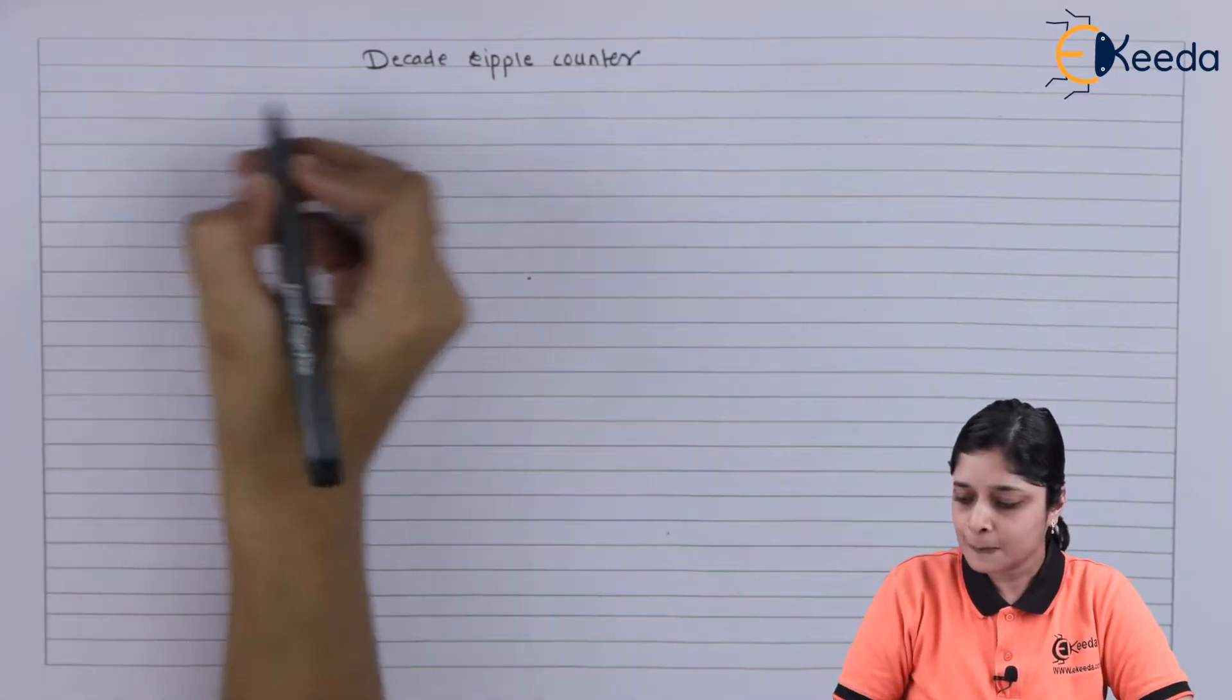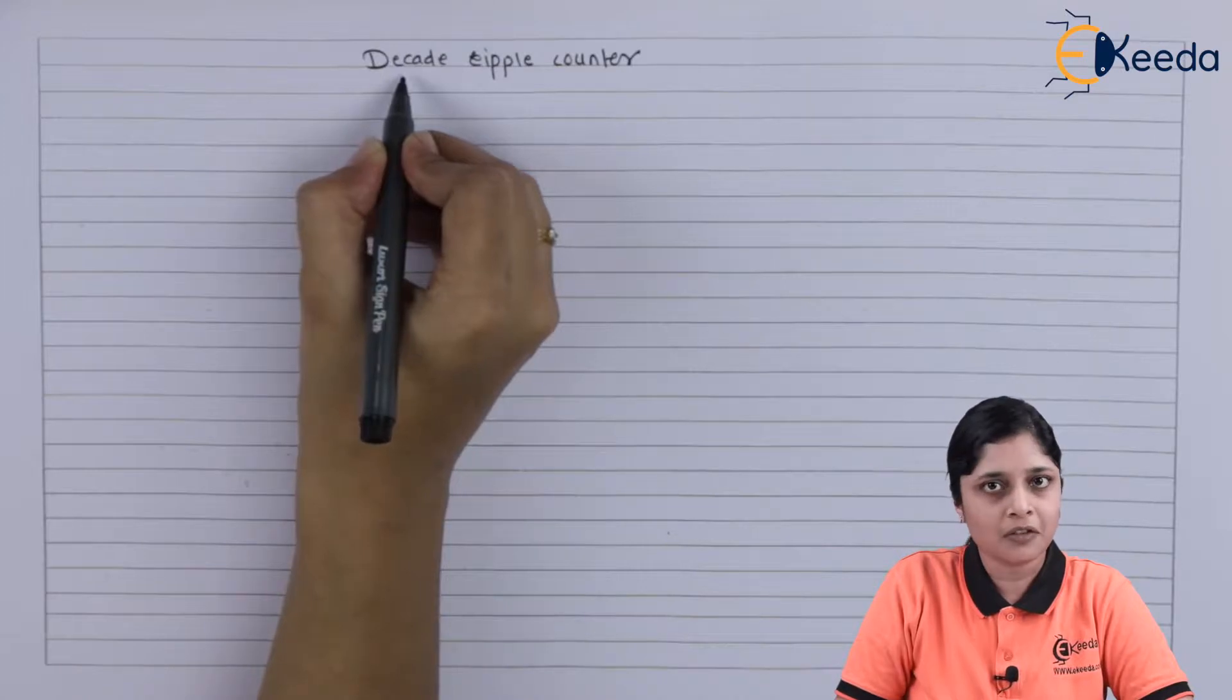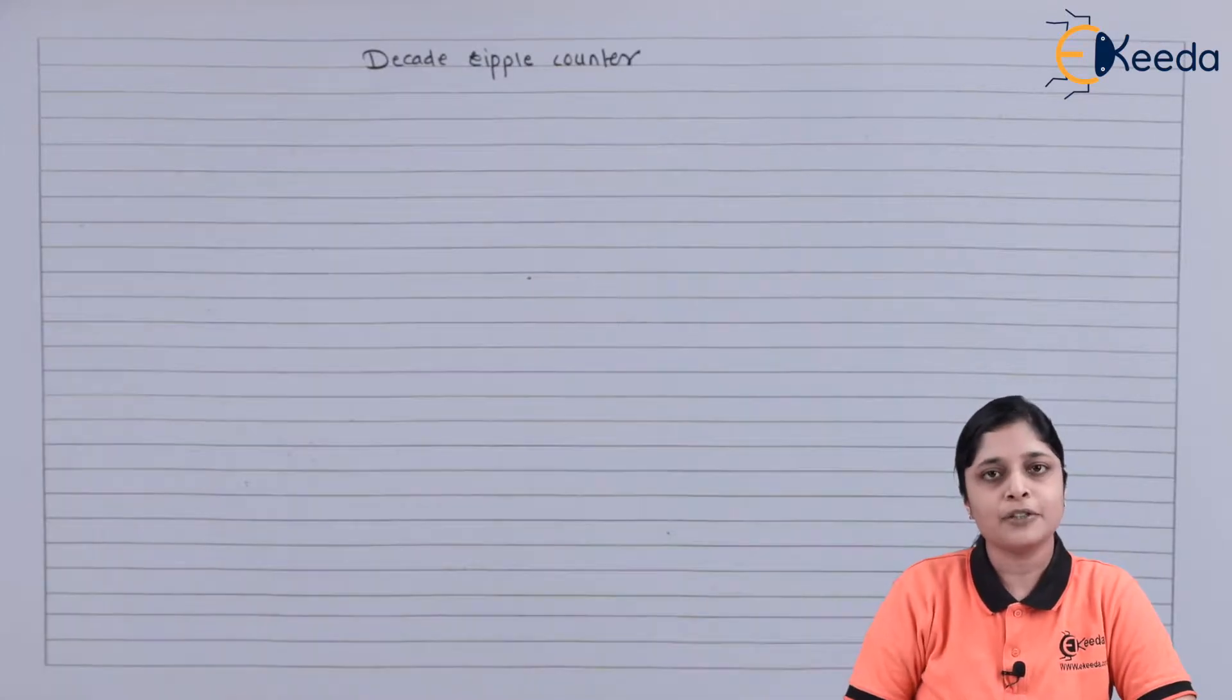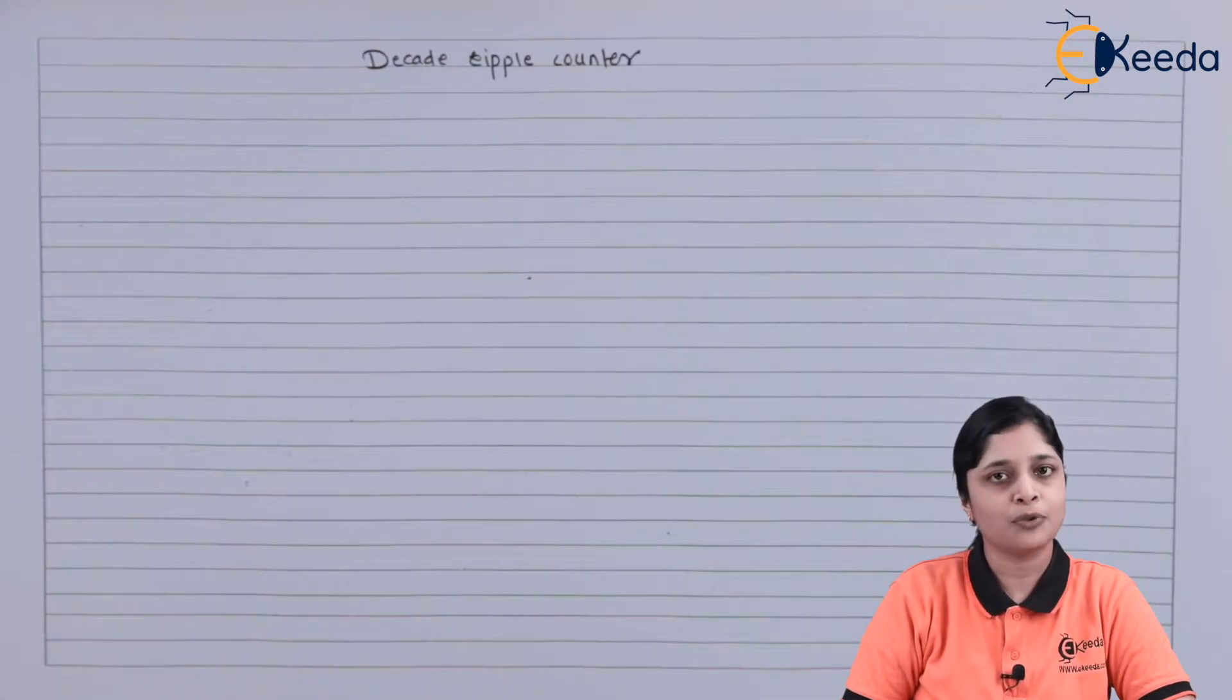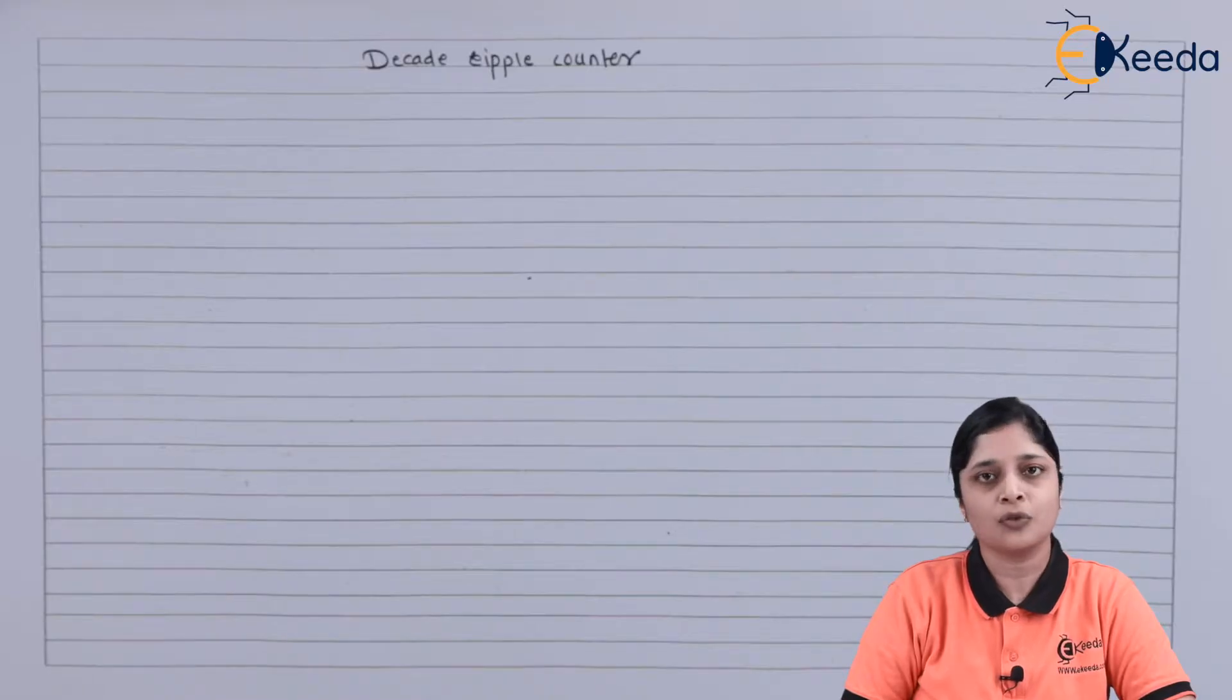First of all, you should know what is the meaning of Decade. Decade means it should count up to 0 to 9, and for 10,